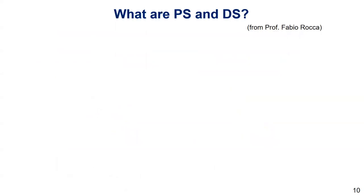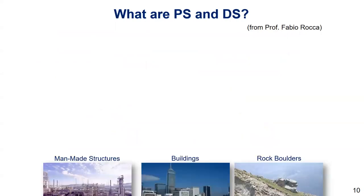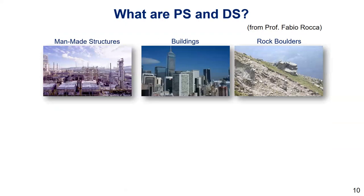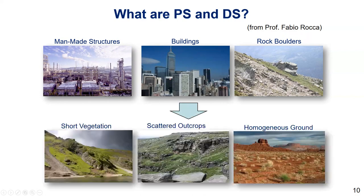On the other hand, a persistent scatterer does contain a dominant scatterer in the resolution cell compared to the DS. The PS pixel phase must be stable and coherent, and therefore the PS will provide high quality information at the point target location. The PS targets often correspond to artificial objects widely available over an urban area. A few targets in nature can be permanent rock powder.